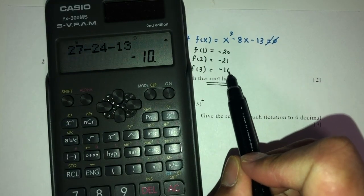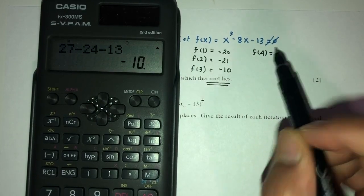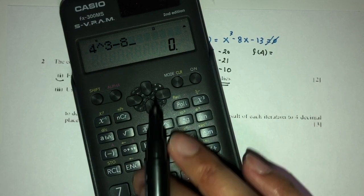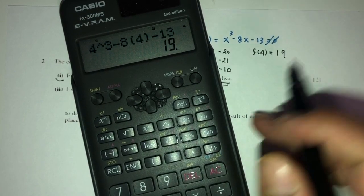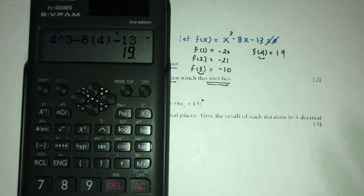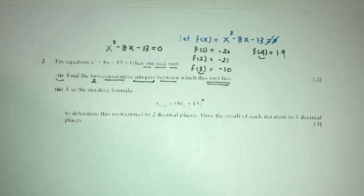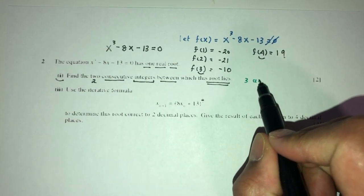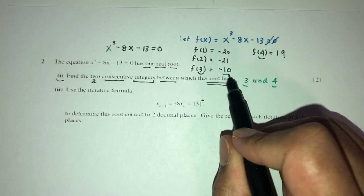f(4): 4 cubed minus 8 times 4 minus 13 gives 19. As you can see, the sign changes from 3 to 4. So by trial and error we can say that the root lies between 3 and 4 because of the change in sign.